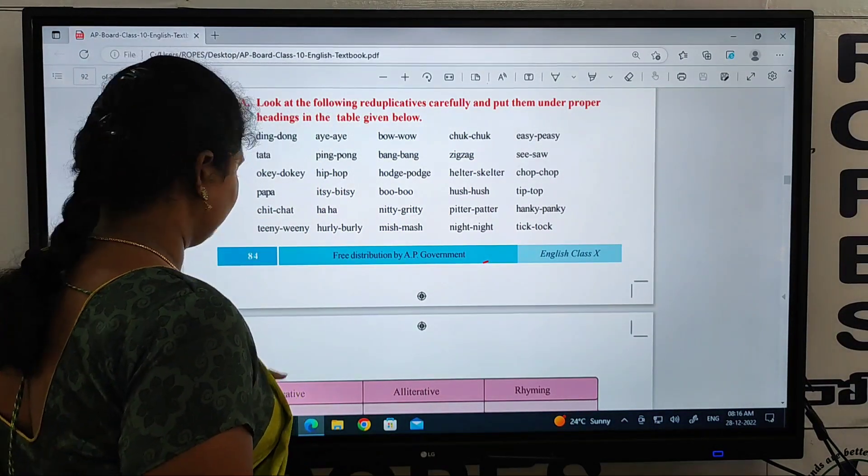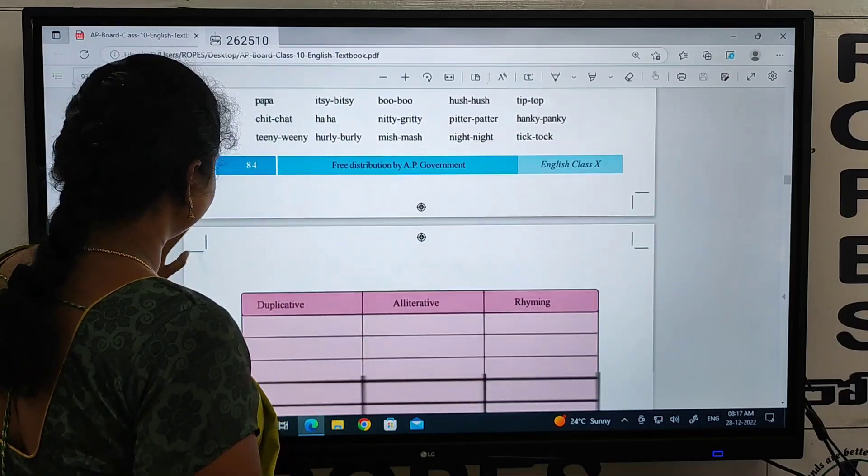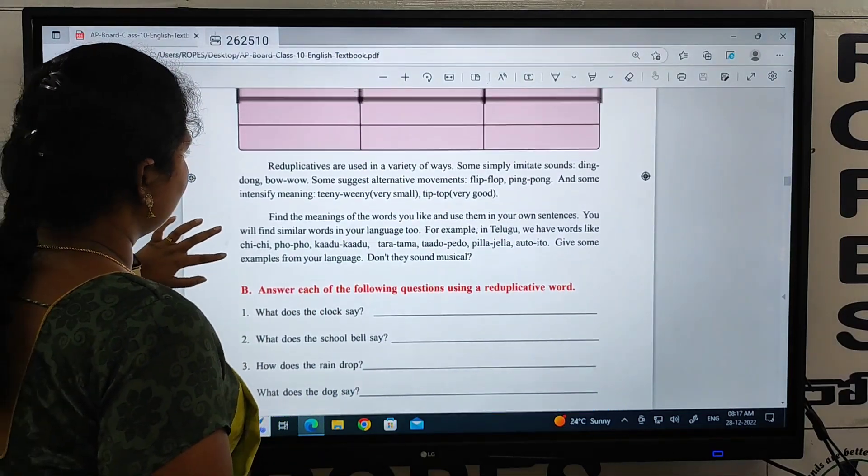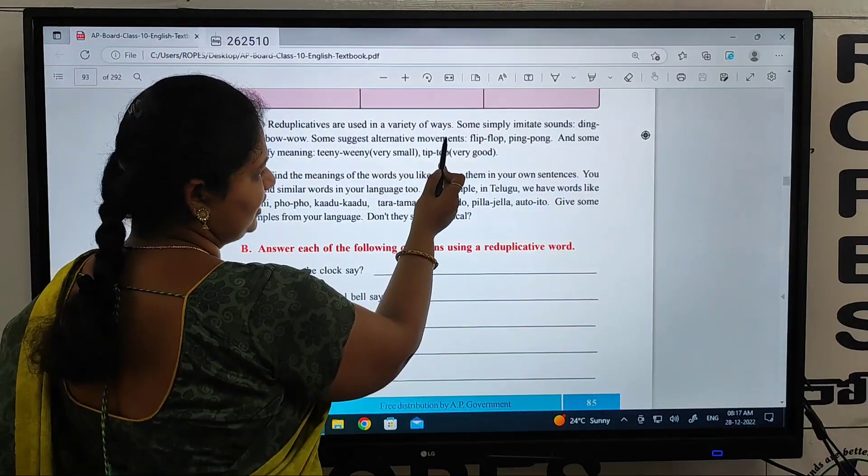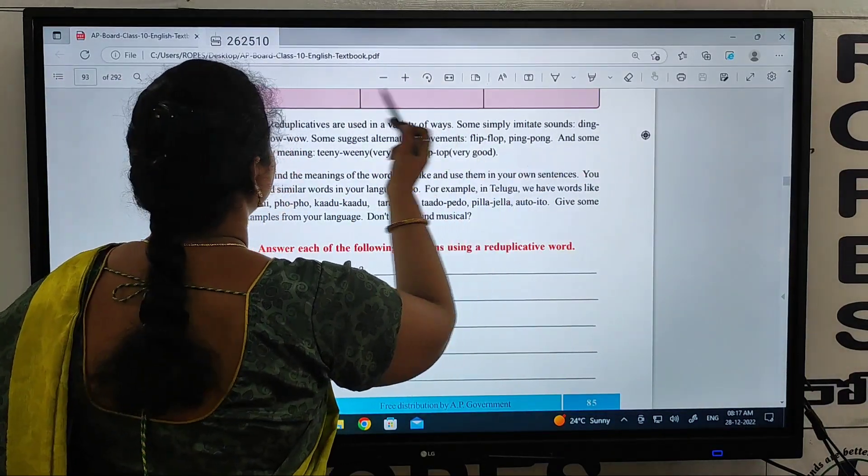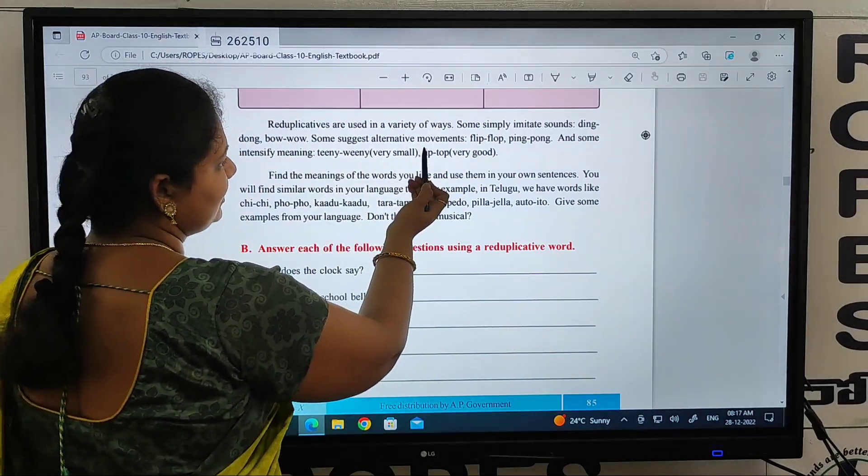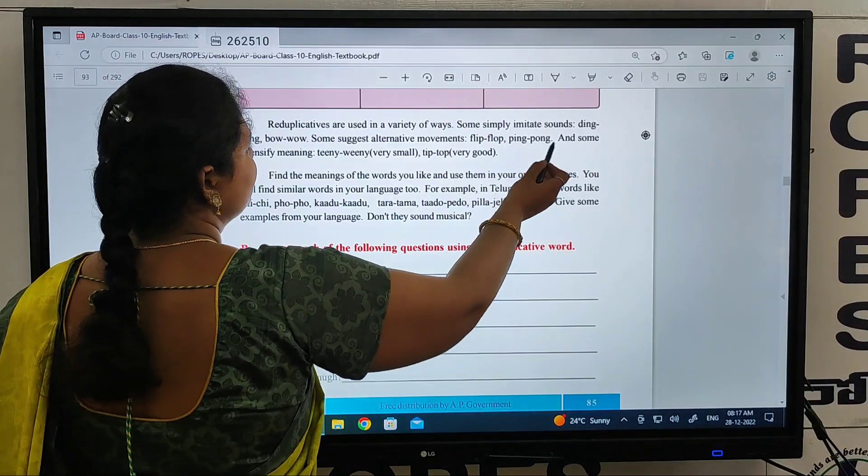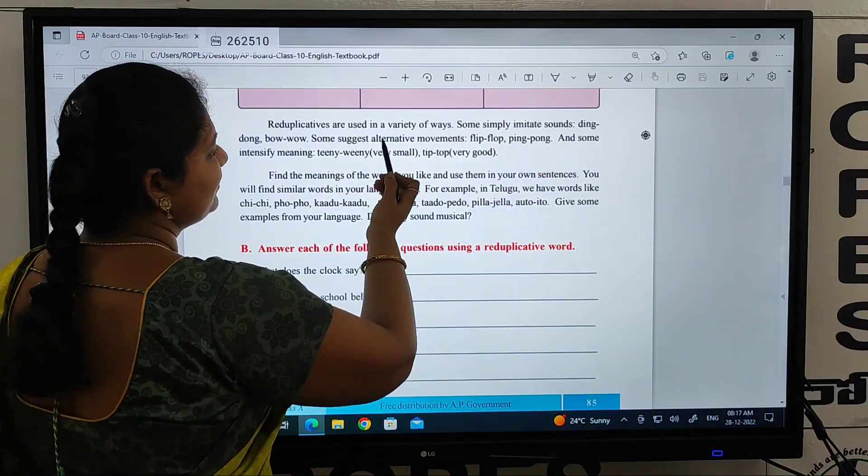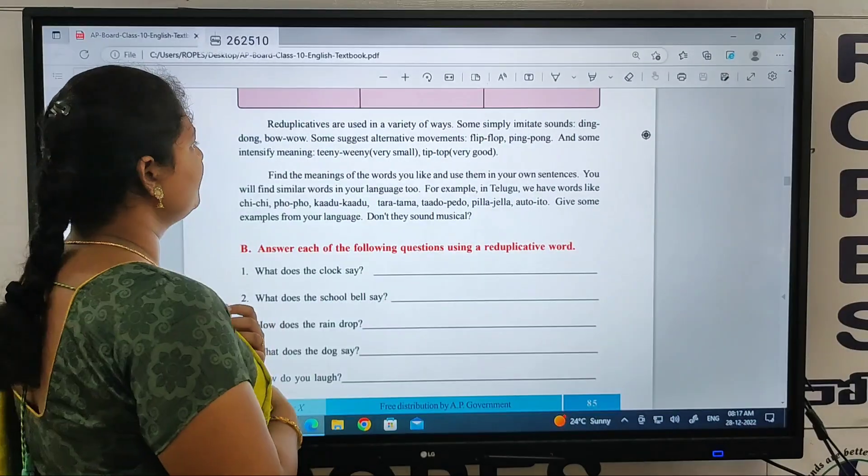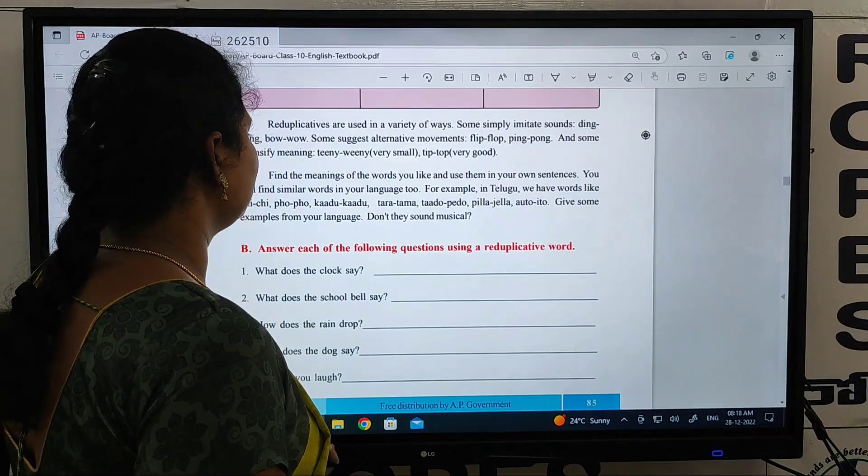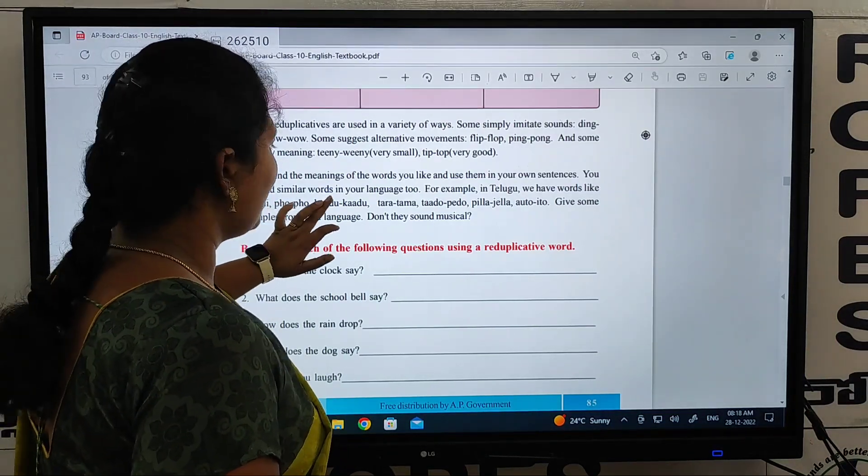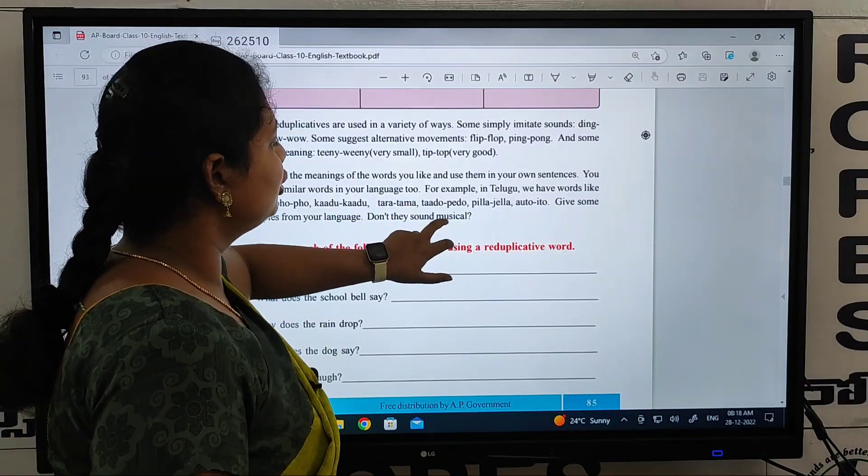Ding dong, within alternative words. So now, duplicative words. Yuk yuk, for example, I will explain this. We will write. Reduplicative word used in a variety of some ways. Some simply imitate the sounds: ding dong, bow wow. Some suggest alternative movements: flip flop. And some suggest very small talk, very good.